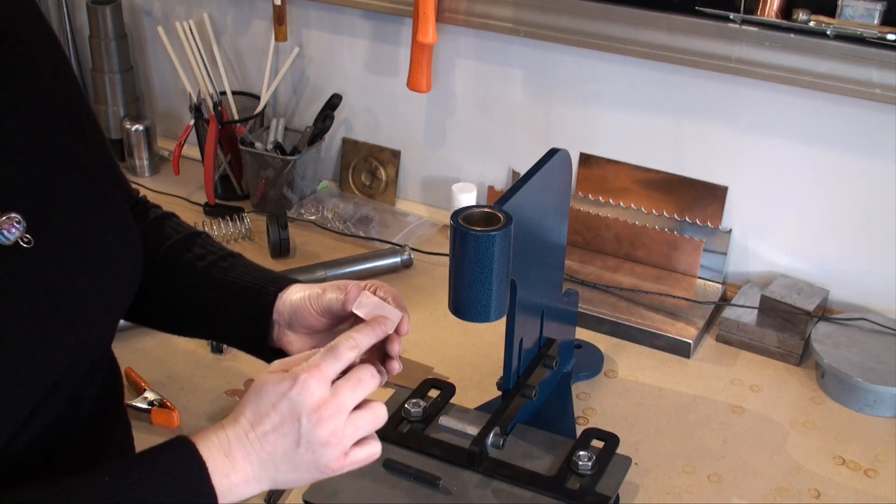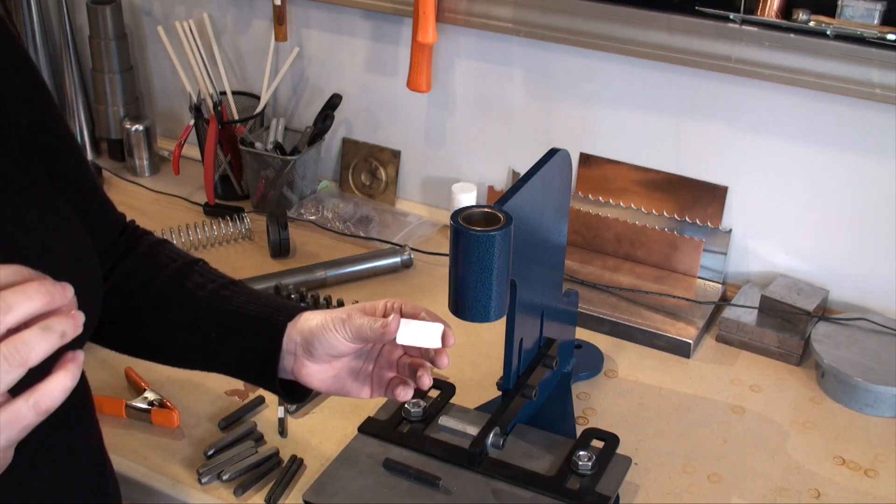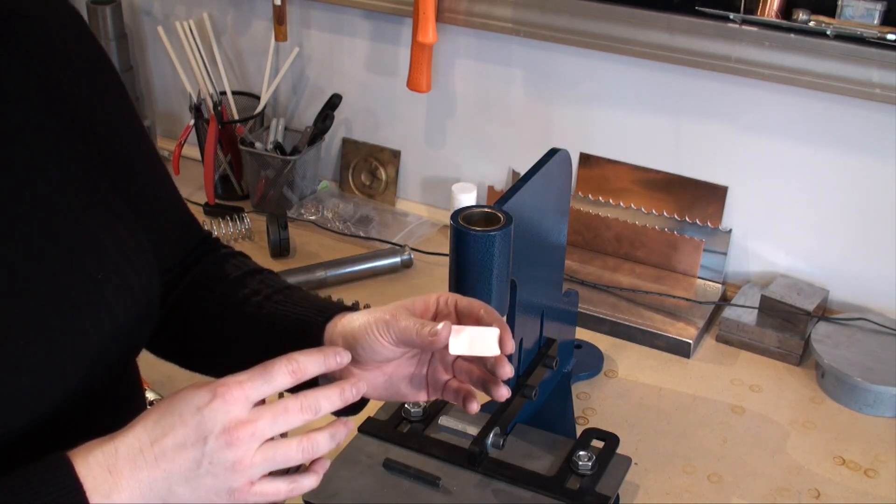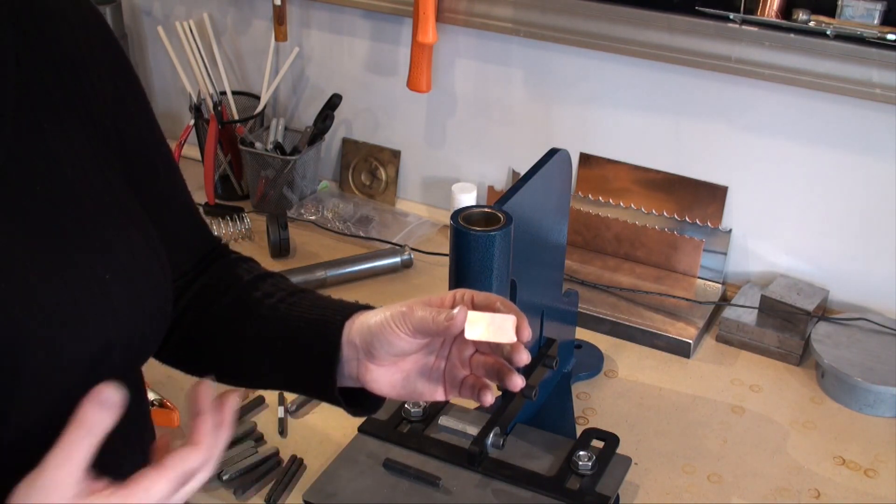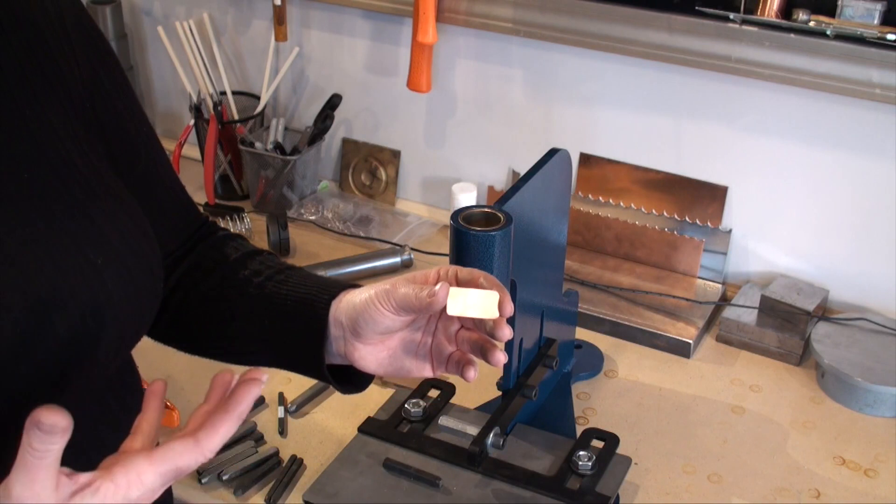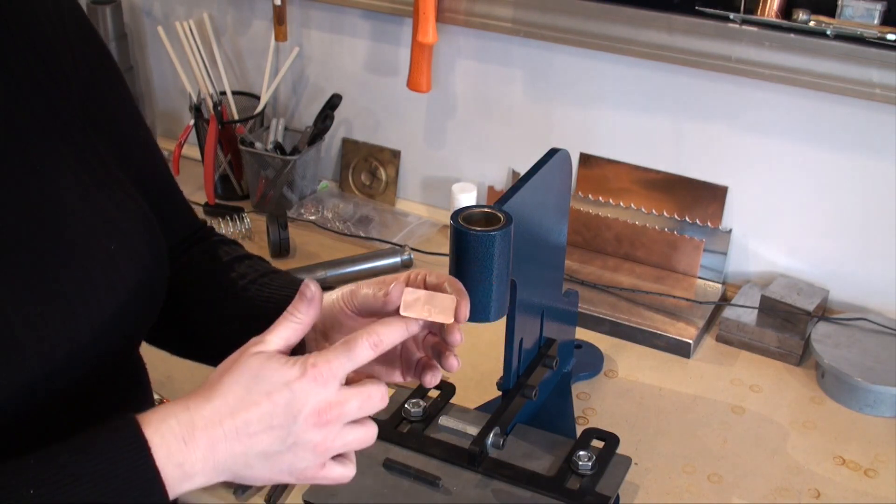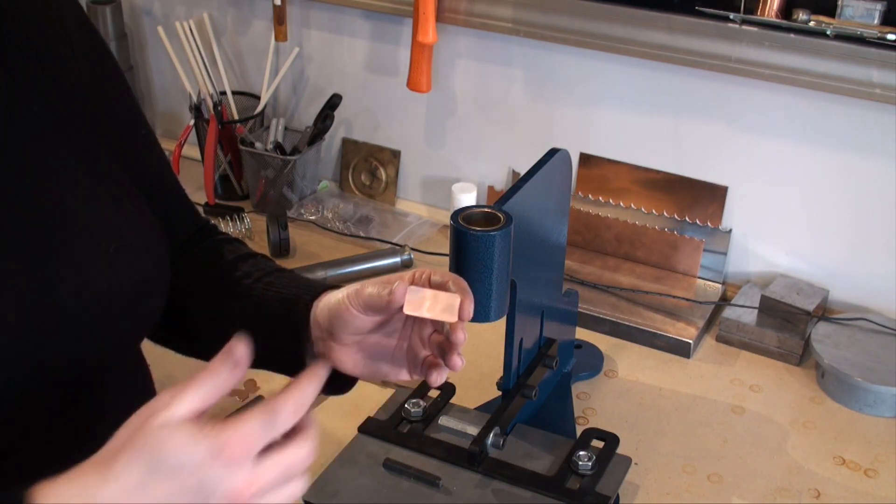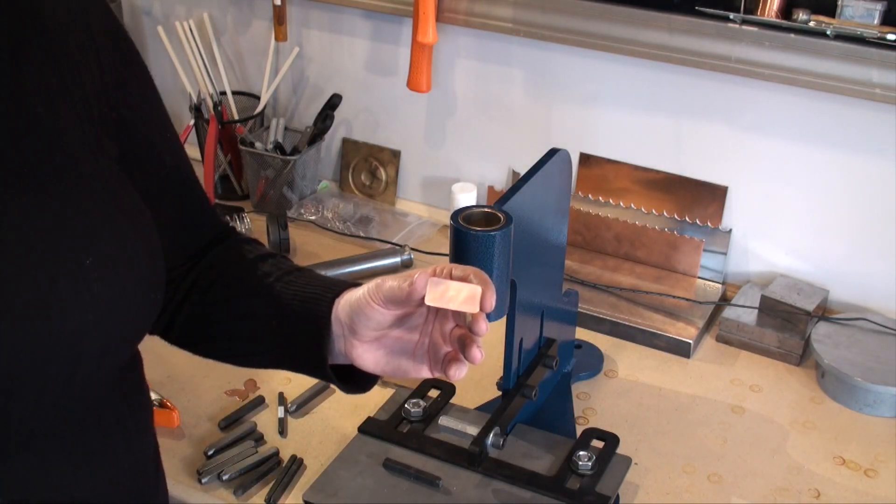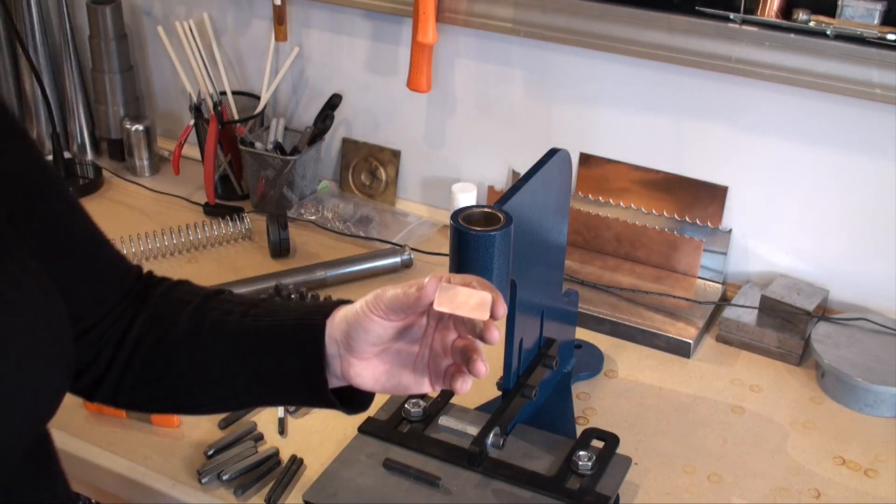Also notice back here because of this, I'm not getting a lot of indentation on the back side of my piece, which is kind of nice because I know that there are times where I might hit it a little bit too hard with a hammer, and I start to deform the back part of my piece, and then there becomes a lot of cleanup that's involved in this. So what are some other ways that you can use this tool?